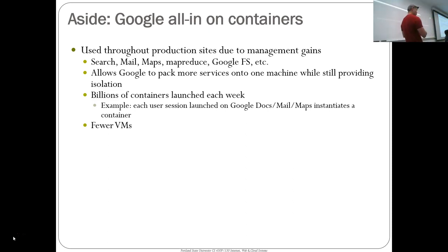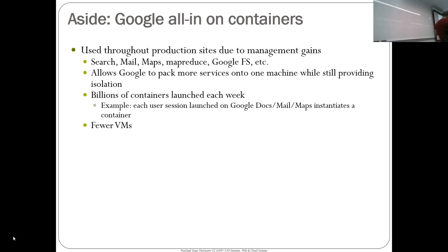Google is all in on containers. They're running billions of containers every week. When you access Google Mail, on the back end it pops up a container just for your mailbox to give you isolation. They need to run these things quickly if they're going to do that on-demand for every session. This allows Google to pack many more services onto a single machine than they could with virtual machines per instance.